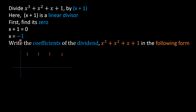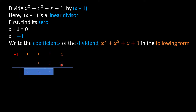We write the zero -1 here, then write 1 over here. -1 × 1 = -1; 1 + (-1) = 0. -1 × 0 = 0; 1 + 0 = 1. -1 × 1 = -1; 1 + (-1) = 0. So this 0 is the remainder we have found after this synthetic division.